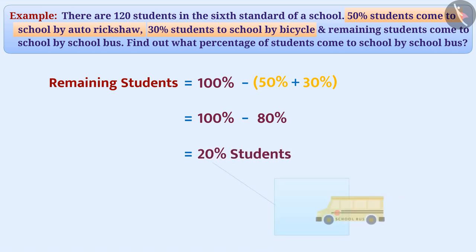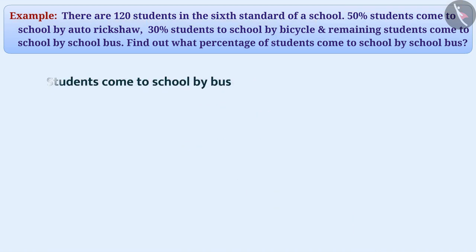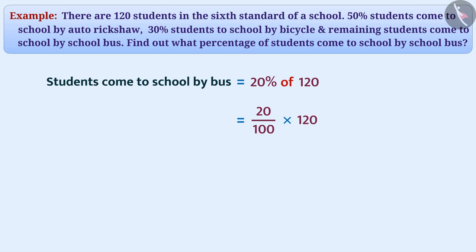The number of students coming to school by bus is equal to 20% of 120, that is equal to 20 divided by 100 multiplied by 120, which is equal to 24.